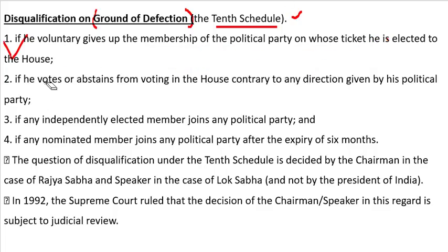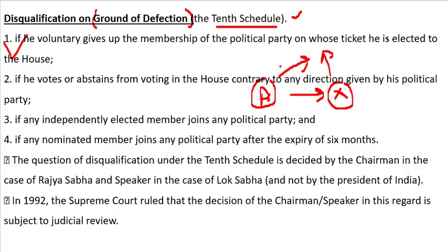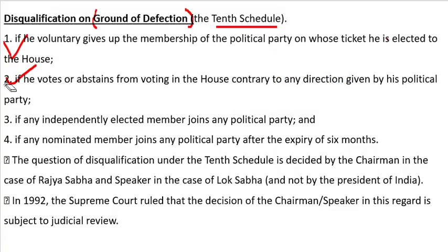Second point: if a member votes or abstains from voting in the house contrary to any direction given by his political party, he will be disqualified. For example, if Person A was elected from Party X and a law is being passed in Parliament, but A votes against Party X's direction or does not vote when asked to — going against his party — then A will be disqualified as a Member of Parliament.